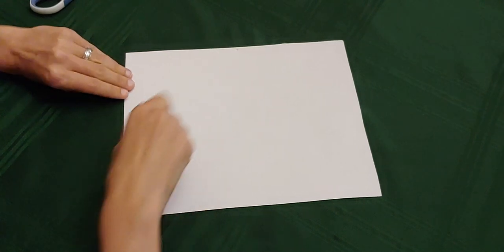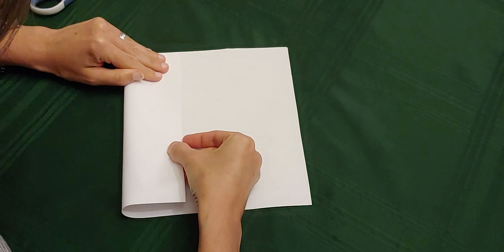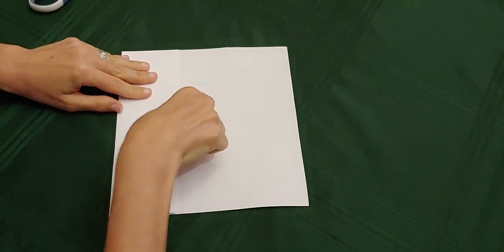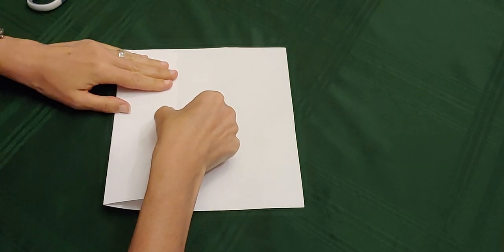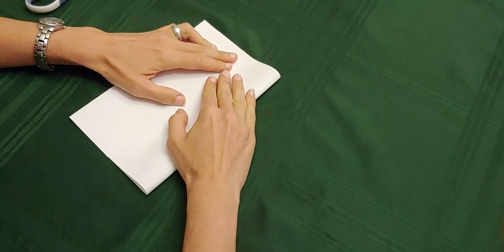Now that you have that marked, you're going to fold your paper inwards evenly so that it stops at that center point. You're going to do that on both sides.